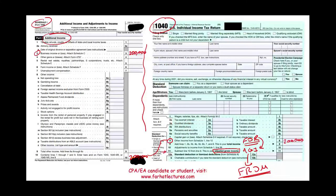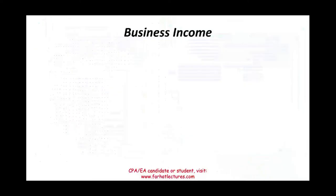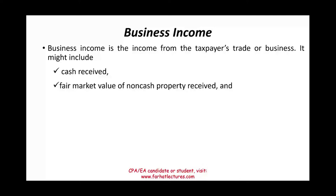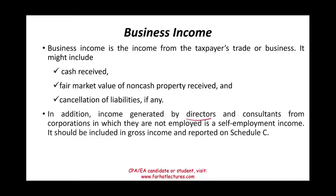Business income is the income from the taxpayer's trade or business. It might include cash — the most common form — or property, where the fair market value is considered business income. It could also include services provided to you or cancellation of debt. As a director or consultant doing work for a corporation where you are not an employee, that is self-employment income, reported on Schedule C.